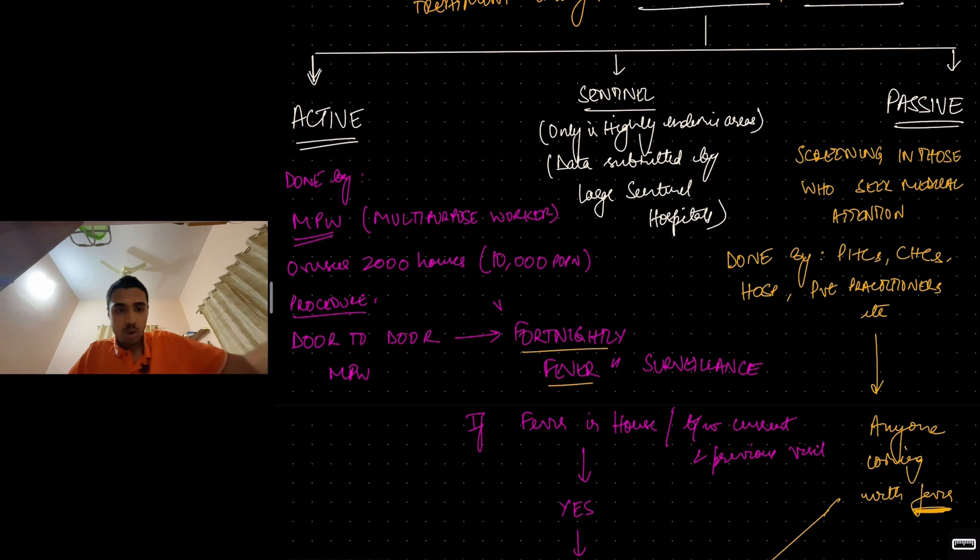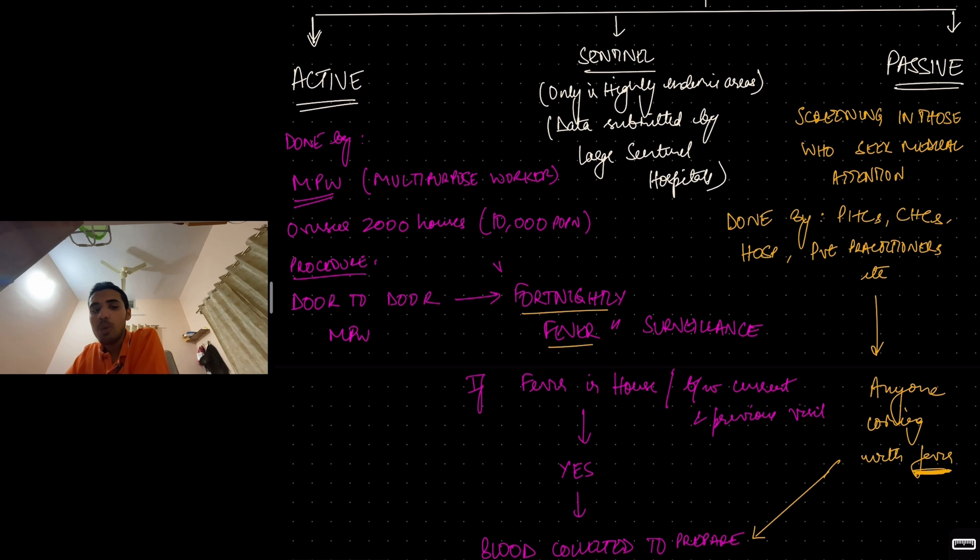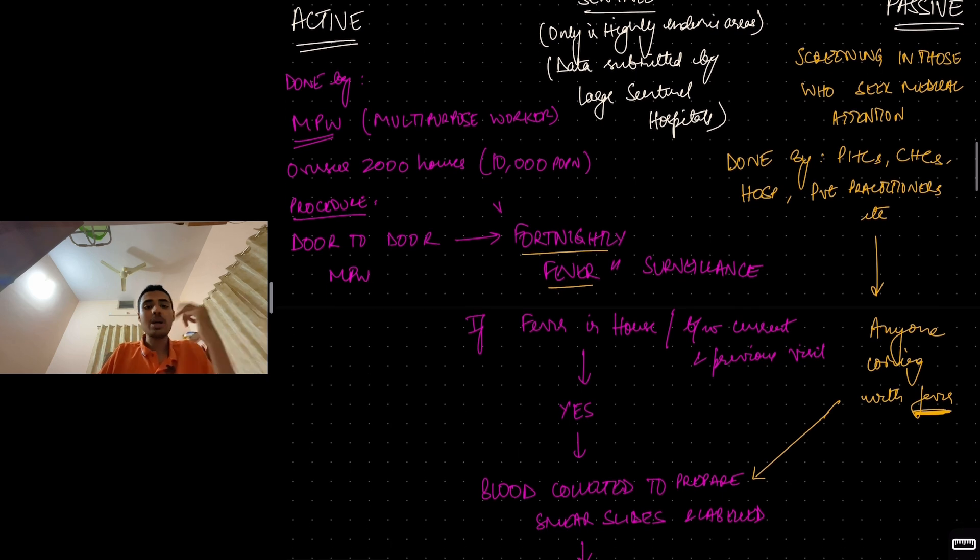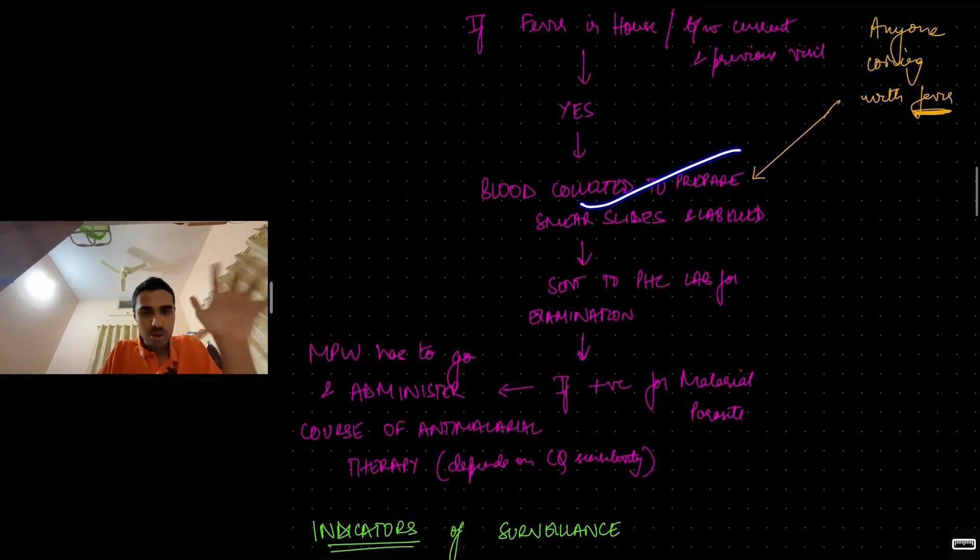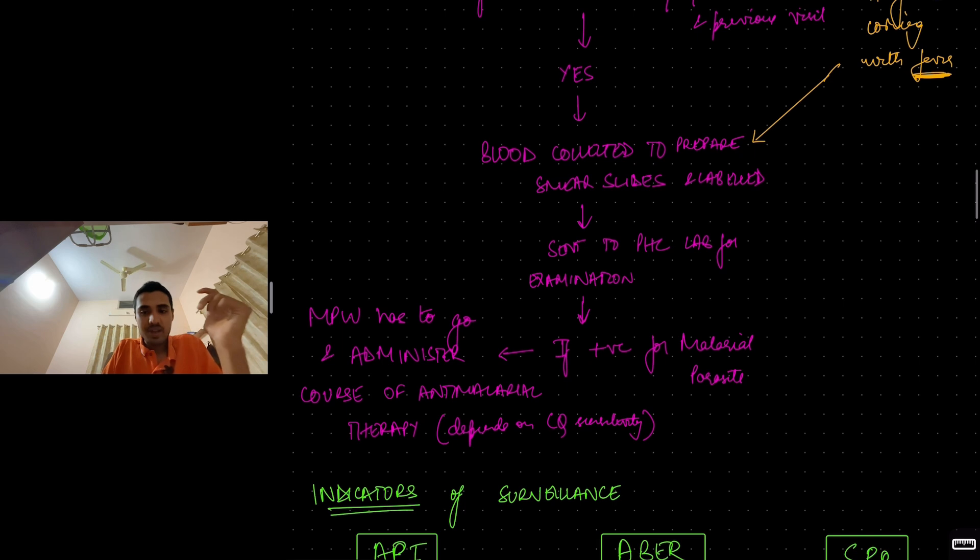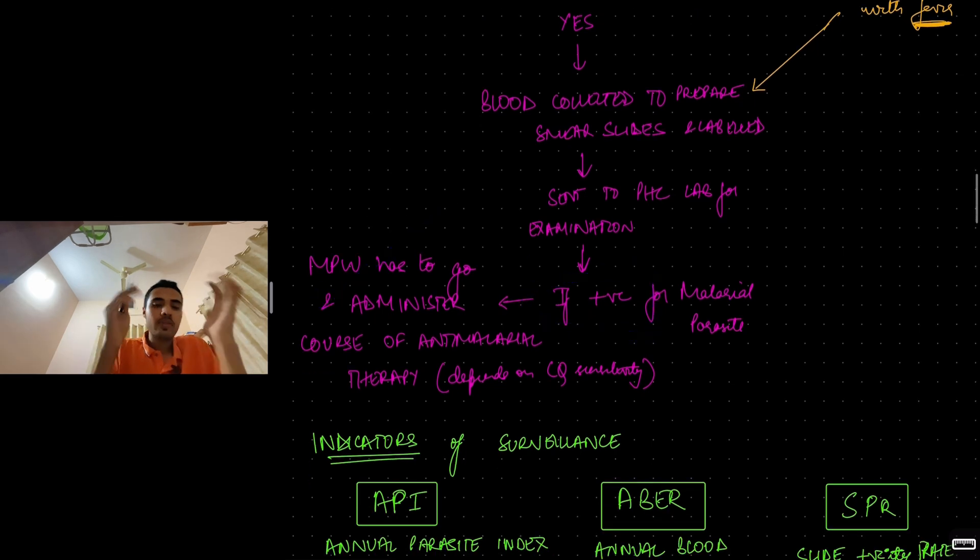Passive surveillance, you're screening for malaria in people who are already coming to you for health advice or for treatment. So those who seek medical attention, you're doing screening. Who will do this? PHC doctors, CHC doctors, hospital doctors, local practitioners, etc. Anyone who comes to them for any disease, but if they have fever, anyone coming with fever, once again you will collect blood, you will do smear, you will send it for PHC lab. If it comes positive, multipurpose worker will go, give course of anti-malarial therapy.